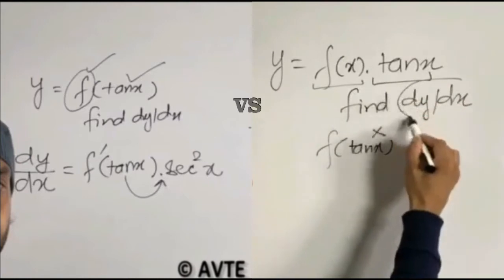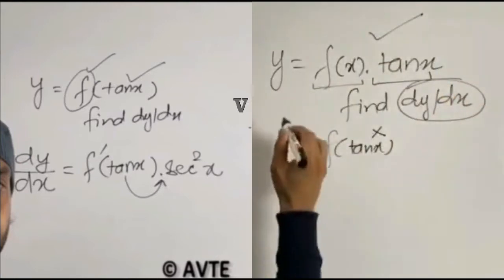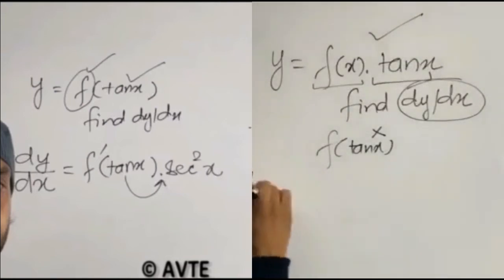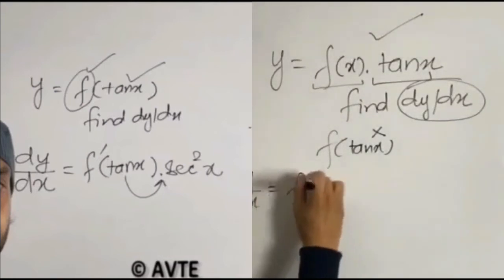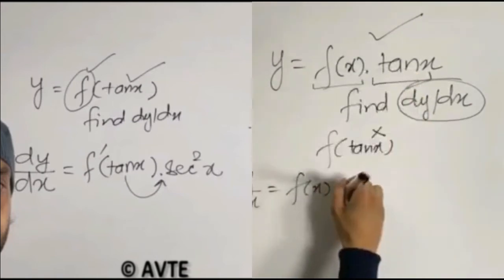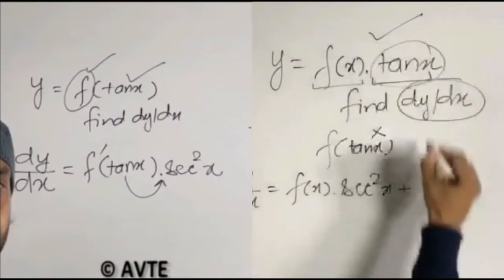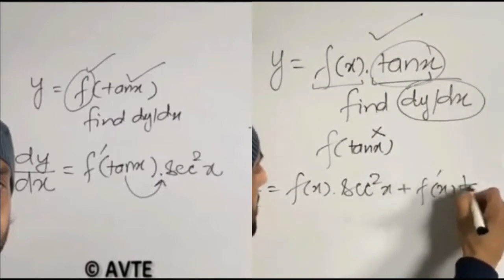So now when you do the derivative of this expression you have to apply the product rule and the derivative will be f x as it is, the derivative of tan x is secant square x, plus tan x as it is, the derivative of f x is f dash x.